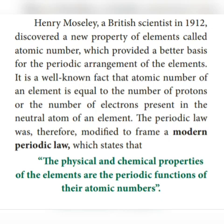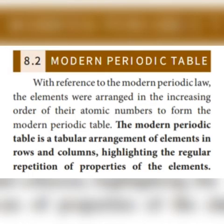Note this: in Mendeleev's periodic table it depends on atomic mass, and in modern periodic table it depends on atomic number. The elements were arranged in the increasing order of their atomic number to form the modern periodic table.